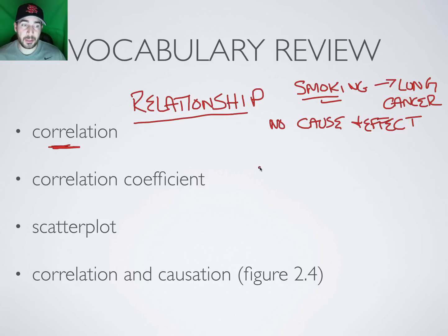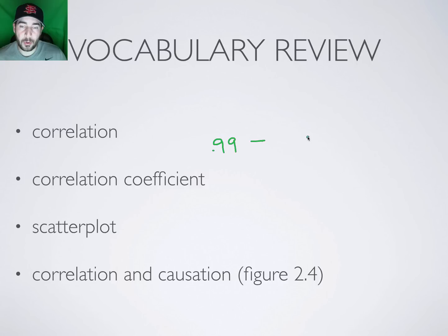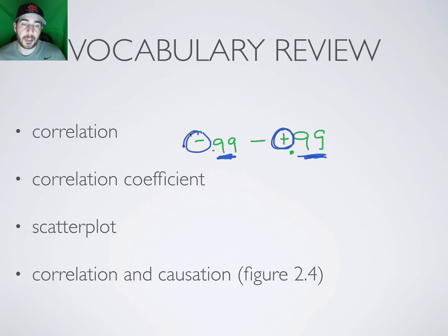Correlation simply means a relationship between two variables that can be strong or weak, which leads us to the correlation coefficient. A correlation coefficient is a number that shows how strong or weak a correlation is, ranging between -0.99 and +0.99. Two things to remember: the number determines how strong the correlation is — the closer to one, the stronger — and the sign tells you what direction the correlation is going.